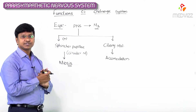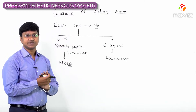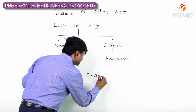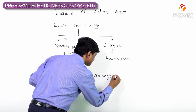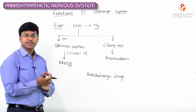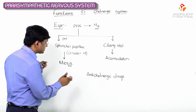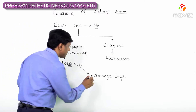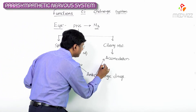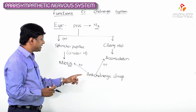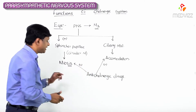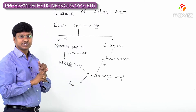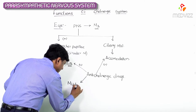Now what does the anticholinergic nervous system do? Remember, anticholinergic drugs will inhibit sphincter pupillary constriction and will also inhibit the constriction of the ciliary muscle. Accordingly, anticholinergic drugs will cause dilatation of the pupil, which is called mydriasis.